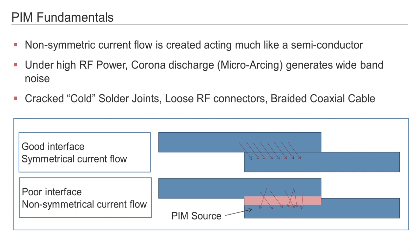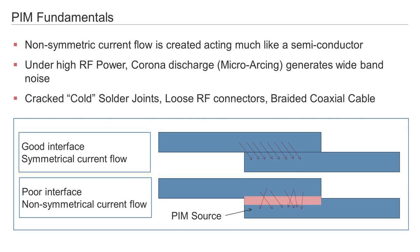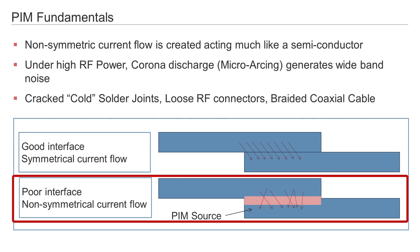In an ideal infrastructure, the current flow of the RF signal is symmetrical. A symmetrical current flow is a homogenous current flow between contact points — for example, 360 degrees on coax cables and RF connectors. It is for this reason that we talk in terms of a linear transmission system. If there is dirt on a connector interface, there is no longer 360 degree contact. This results in a non-symmetrical current flow, which causes PIM, because the current has some hot spots.